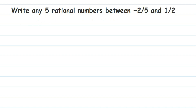Whenever you're finding rational numbers using this method, the very first step is to check the denominators. If you see the denominators, we have five and two — they are not the same. If they are not the same, you have to take the LCM and make them the same. So we're going to first take the LCM of five and two, which will be ten.